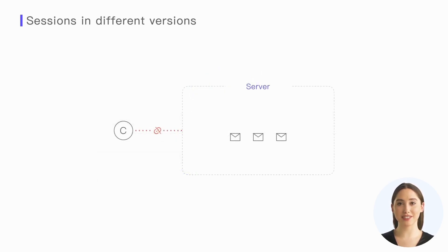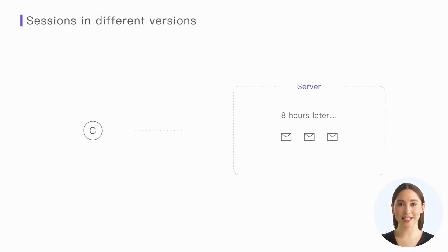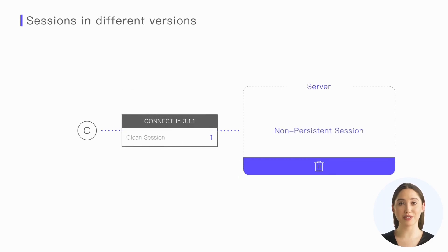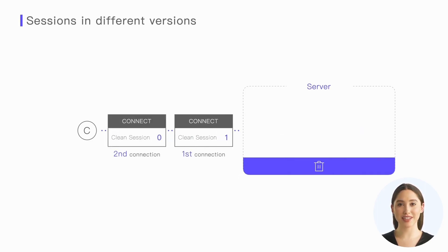For example, in many cases we use persistent sessions to prevent message loss due to brief network interruptions. However, if a client hasn't logged in for a long time — such as two or eight hours — the stored messages on the server may become outdated. In MQTT 5, we can specify Clean Start as 1, and the server will discard the old session and start a new persistent session. However, in MQTT 3.1.1, if we set Clean Session to 1 to discard the previous session, this also means we won't be able to use persistent sessions for that connection. If we don't want this, we must specify Clean Session as 0 and connect again, which is quite inconvenient.